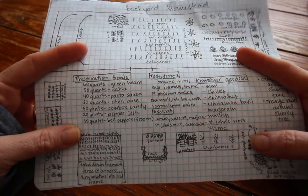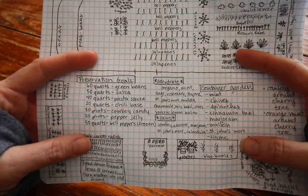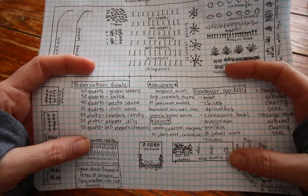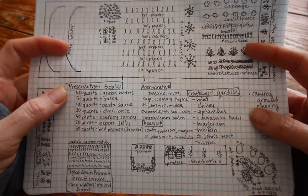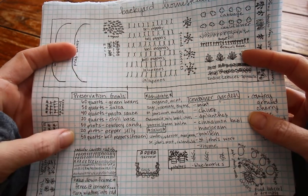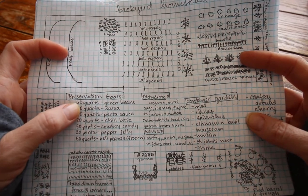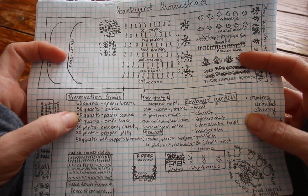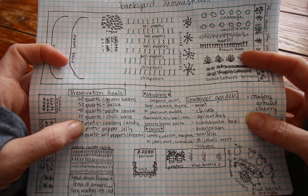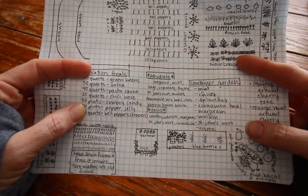I started with what our goals were gonna be based off of what I did last year and what I still have in our canning pantry. I want to pressure can 60 quarts of green beans for this year, 50 quarts of salsa, 40 quarts of pasta sauce, 20 quarts of chili base.